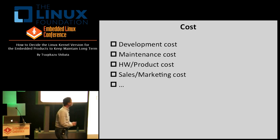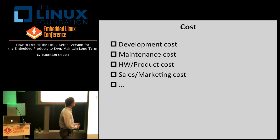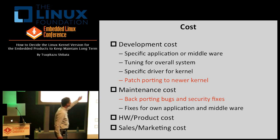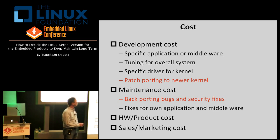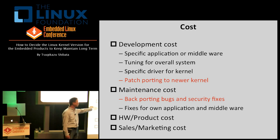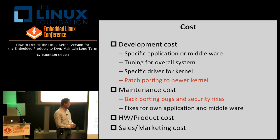The fourth one is cost. Cost is divided into development cost, maintenance cost, hardware product cost, sales and marketing, and so on. The development cost includes specific application or middleware development, tuning, specific driver development, and also patch porting as I mentioned. And maintenance cost includes backporting of bug and security fixes. These two represent a significant amount of work.